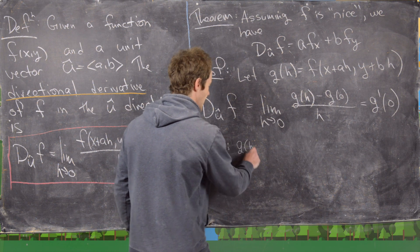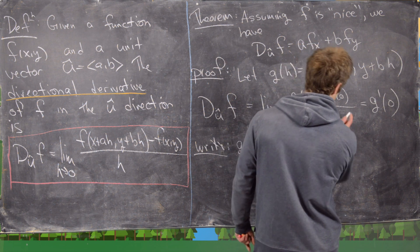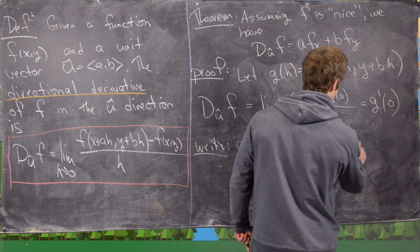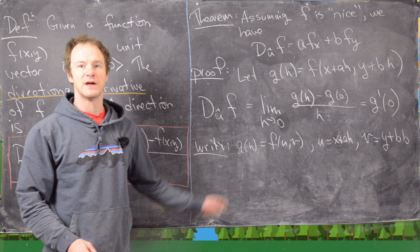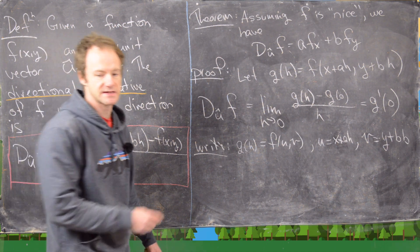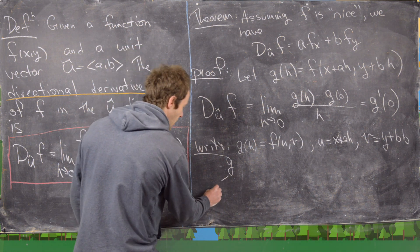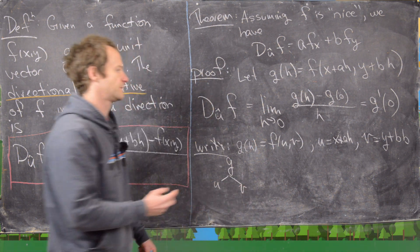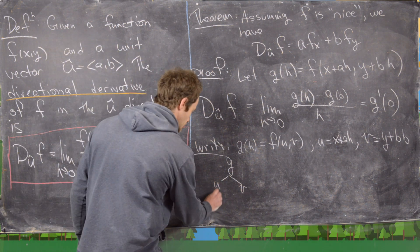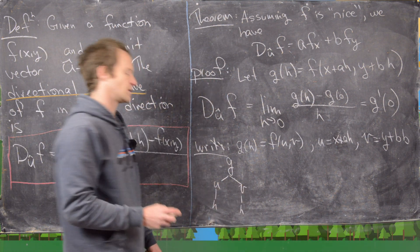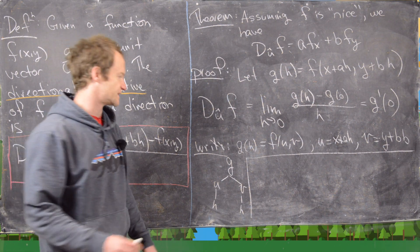We write g of h equals f of u comma v, where u equals x plus ah and v equals y plus bh. This gives us a tree of variable dependence: g depends on u and v, and both u and v depend on h. So to take the derivative of g we need to use the chain rule.